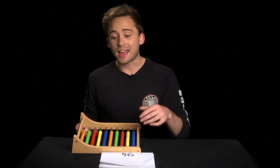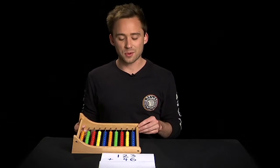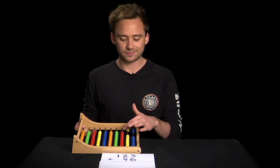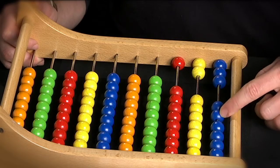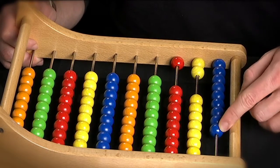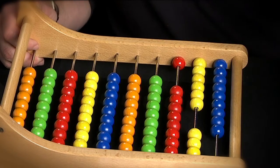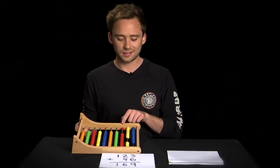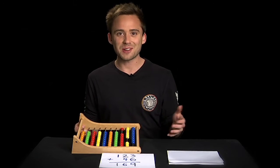Now what about if you want to add those two numbers together? Let's start with 123, and now let's add on our 46. So you push 6 up here, and 40 here. And that gives us 169. Perfect.